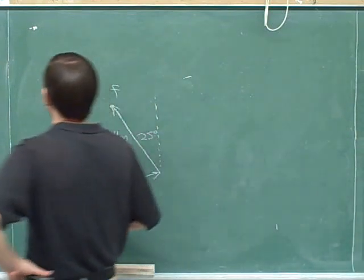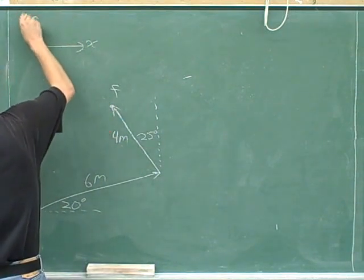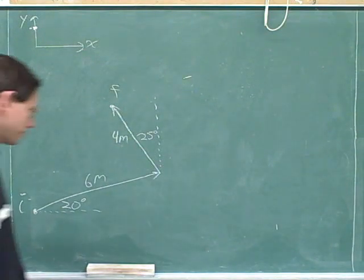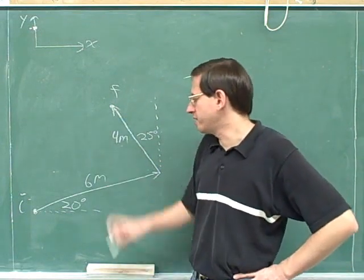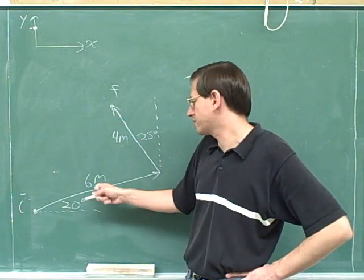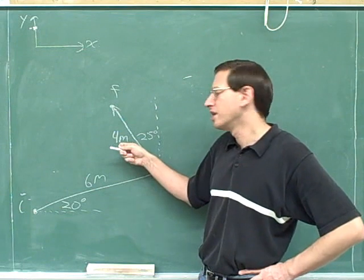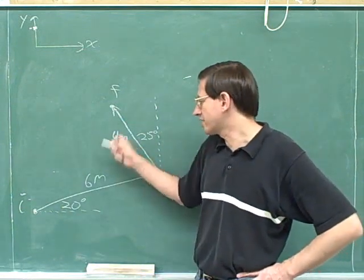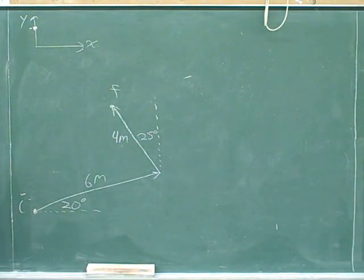I'm going to start by choosing some positive directions. The simplest axes to choose here are horizontal and vertical. The one thing we can't do is just say we're 10 meters from where we started — we can't just say 6 plus 4 is 10. If you walk 6 meters in one direction and then 4 meters in a completely different direction, there's no reason to think you ended up 10 meters away. So we can't just add these together.